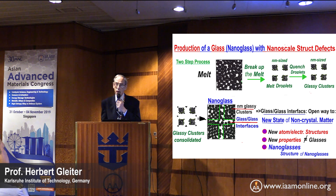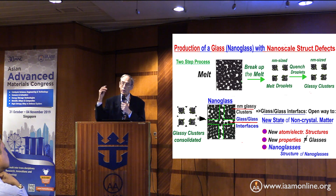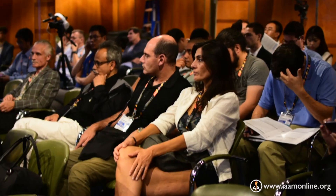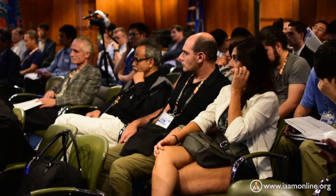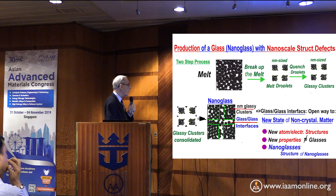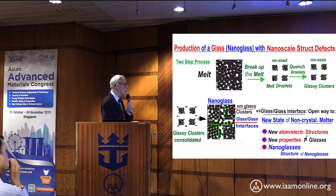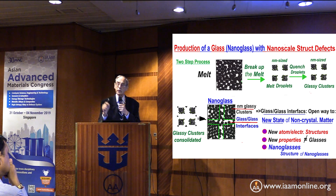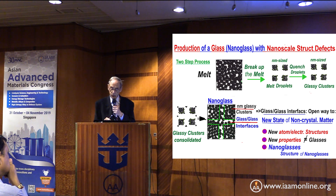Let me briefly explain what a nanoglass is. As you know, since the last 80,000 years, we produce glasses by taking a liquid, cooling it rapidly, quenching it at a glass transition temperature — and the resulting solid is called a glass. In the case of nanoglasses, it's a different, two-step process. We take the melt and break it up into very tiny droplets with the size of a few nanometers, then freeze those droplets to form tiny glassy clusters.